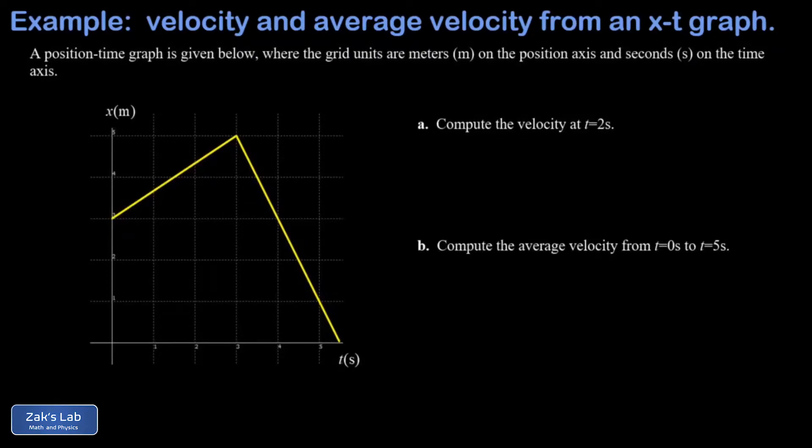In this problem, we're given a position-time graph for some object, and I have grid units of meters on the position axis. So these numbers are a little bit small, but this is one meter here, two meters here, and three, four, and five.